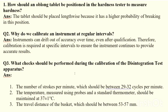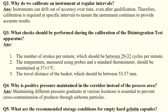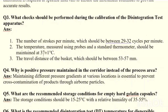What checks should be performed during calibration of a disintegration test apparatus? For the disintegration apparatus, the temperature of the bath is measured — whether the probes are maintaining 37 ± 1°C, which can be verified using a thermometer. The travel distance of the basket should be between 53 to 57 mm, and the number of strokes per minute as well as stroke length need to be tested.